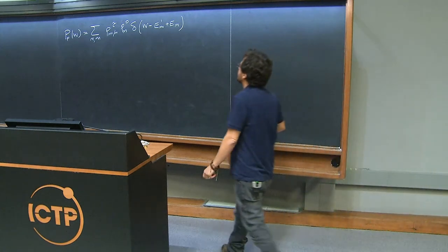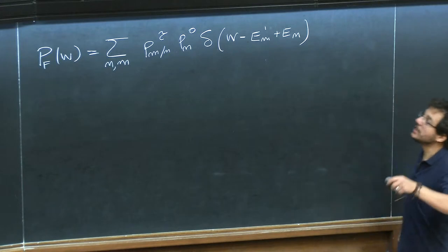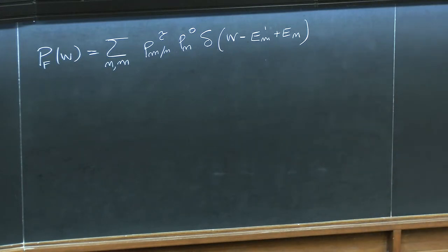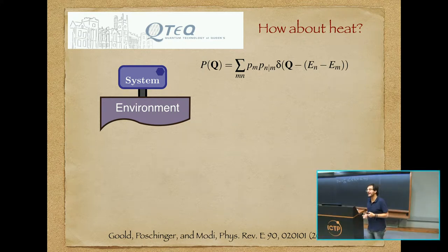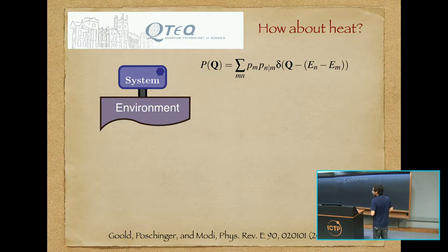The outcomes were of measurements performed upon the system. Here, everything in this expression should be referred to the environment. I'm assuming some form of control upon the environment itself. The environment is an object with a given Hamiltonian, whose eigenstates and corresponding eigenvalues I know. These are the eigenvalues of the Hamiltonian of my environment. What I'm asking is how much heat the environment exchanges with the system — what is the change in energy in the environment due to its coupling with the system.